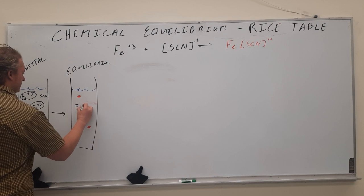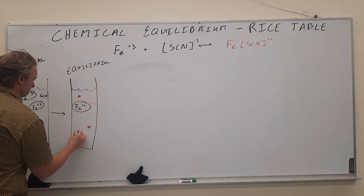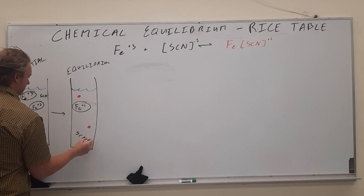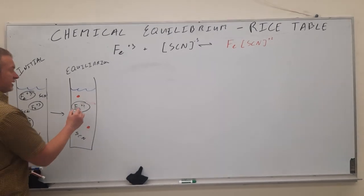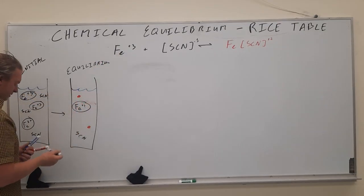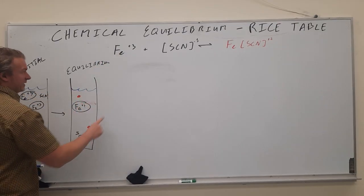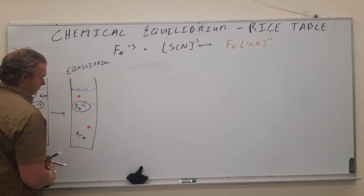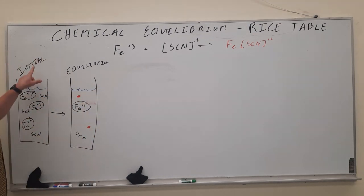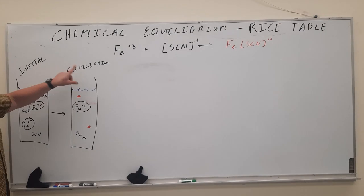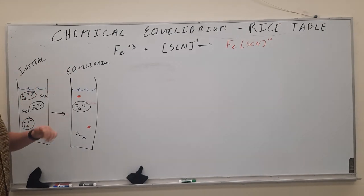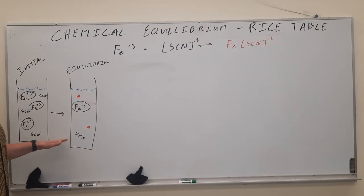So there's still going to be some Fe, some Fe plus three remaining, some unreacted reactant, and also some unreacted reactant present. We have the initial, the equilibrium, and there is going to be a change that occurs. This is atomic vision pictures right here.